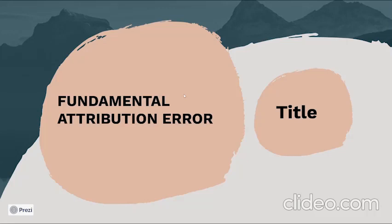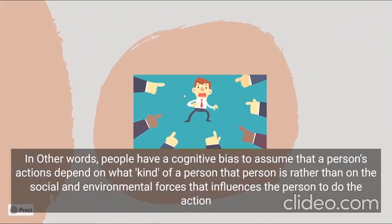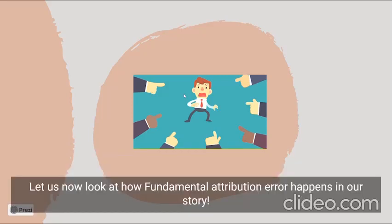Fundamental Attribution Error is a tendency to attribute other people's behavior to their dispositional factors while attributing one's own actions to situational factors. In other words, people have a cognitive bias to assume that a person's action depends on what kind of person they are, rather than on the social and environmental forces that influence the person to do the action. Now let us see how fundamental attribution error happens in our story.